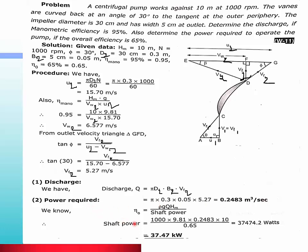For power required, we use efficiency overall formula, which is water power divided by shaft power. Water power is ρgQHₘ. So 1000 × 9.81 × Q × 10 divided by shaft power equals 0.65. Therefore shaft power is 37474.2 Watts, which equals 37.47 kilowatts. So this is the first numerical.